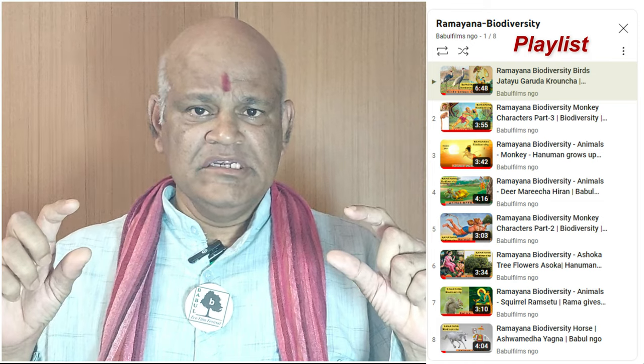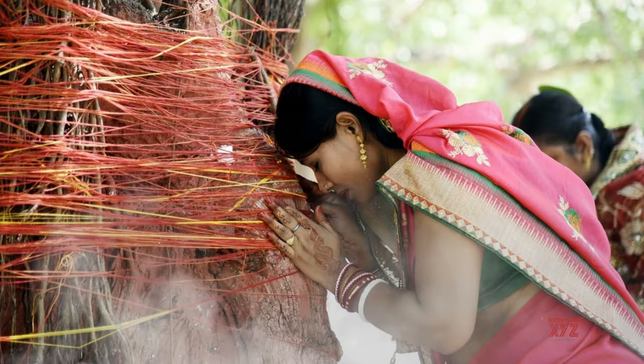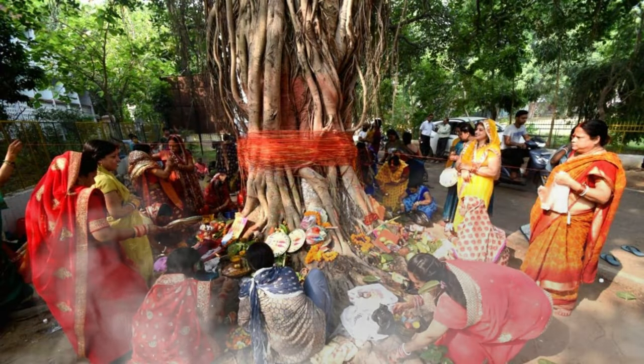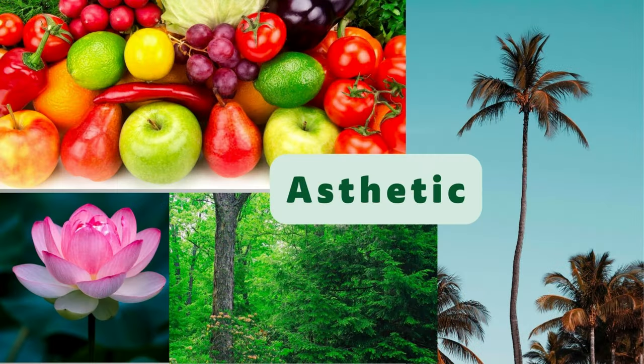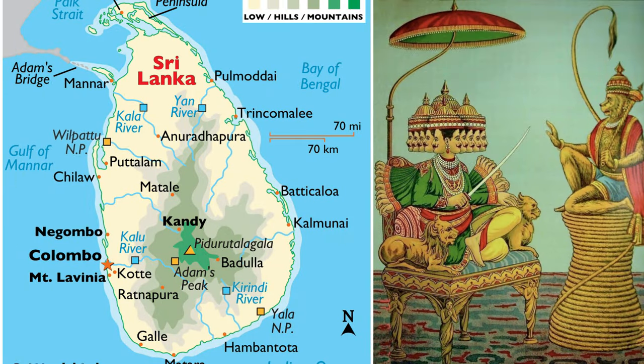Under the playlist 'Ramayana Biodiversity,' we told you about the Ashoka tree in the previous video. In this video, we'll tell you about the other trees in the Ramayana. There are some other holy plants mentioned in the Ramayana — these plants are worshipped and respected for their sacred significance. These trees have aesthetic value and also possess medicinal properties.